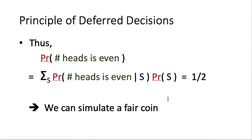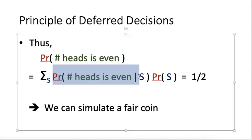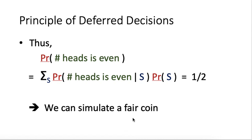Repeating the same procedure as before, the unconditional probability that the number of heads is even equals the summation over all S of the probability of even heads given S times probability of S. Since the conditional probability is always 1/2, the whole sum equals 1/2. So we can indeed simulate a fair coin this way. That concludes part one of this lecture.